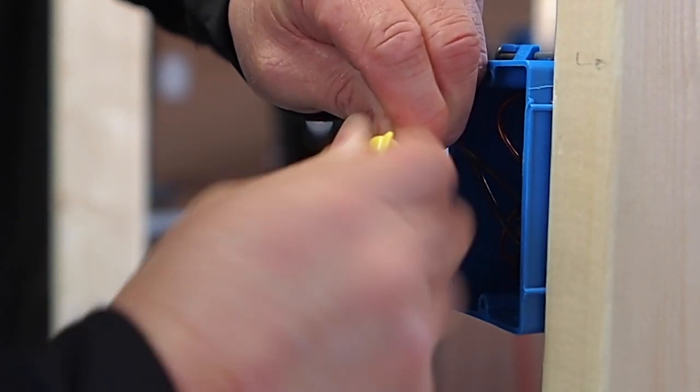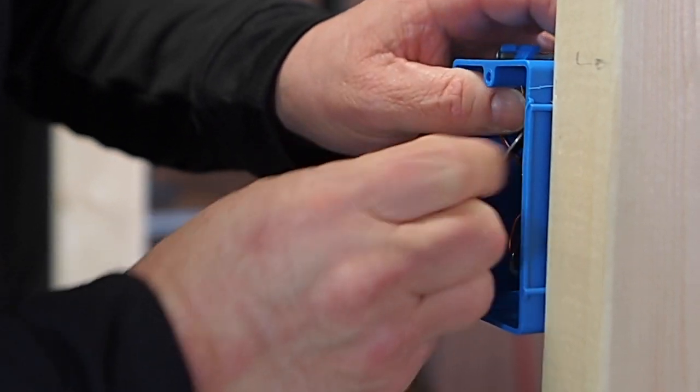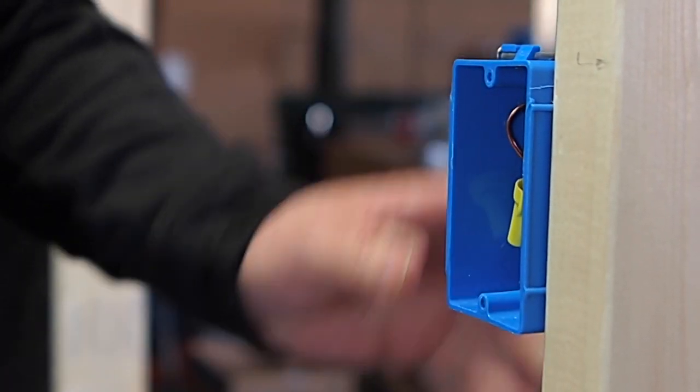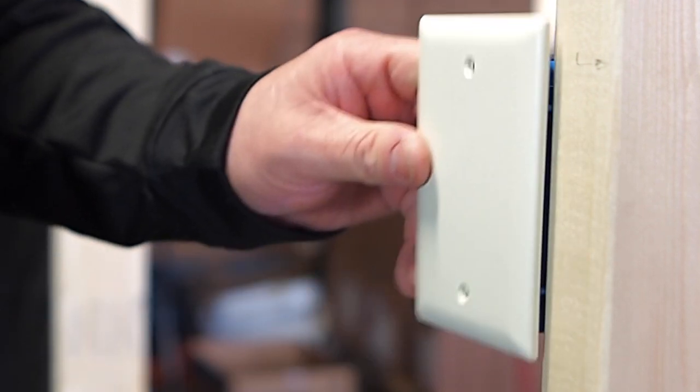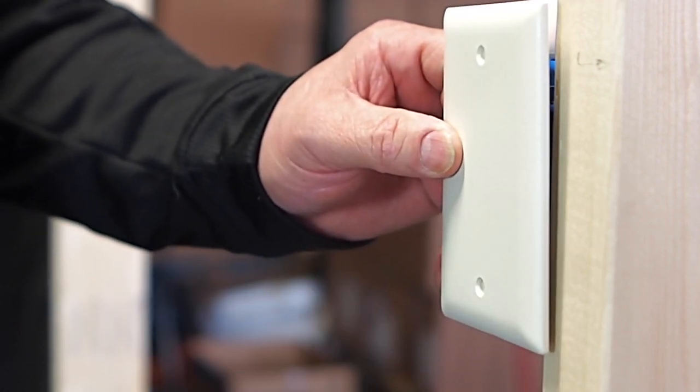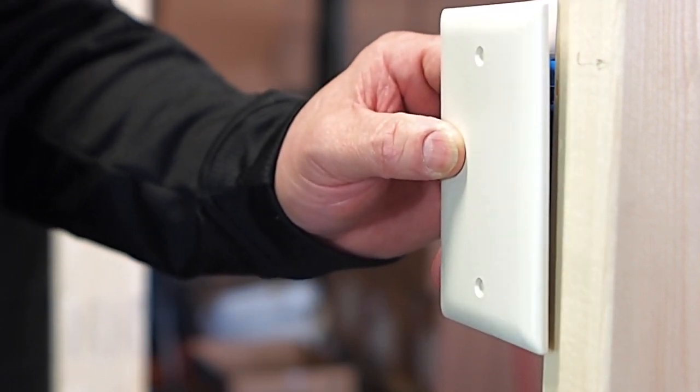We're just simply going to put those two wires together, stuff them back in this box. We're going to add a blank cover and now we have constant power to the fan.